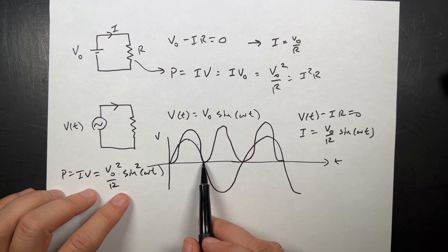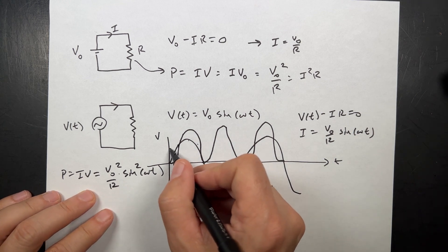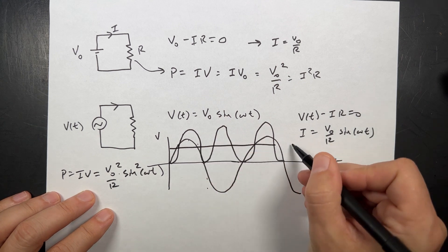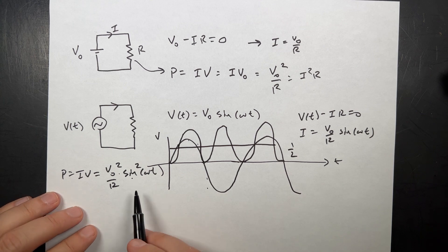It's always positive, and it does have some points where it's zero. There, the current and the voltage are both zero. And it turns out that if we average this, you get one half. So the average of sine squared omega T is one half.